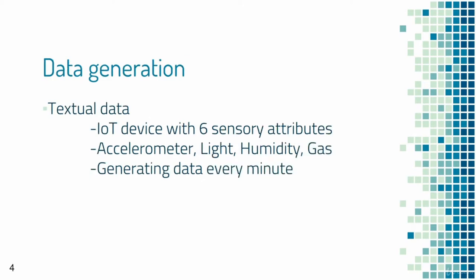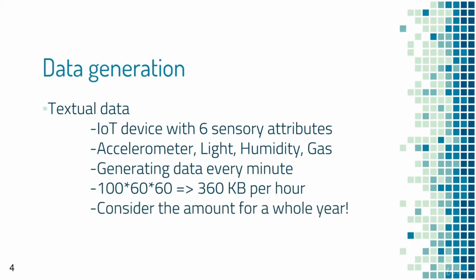The data generated from end devices can be categorized into two types: textual data and multimedia data in the form of images and videos. For example, an IoT device with an accelerometer with three axes and light, humidity, and gas sensors generating data every minute would produce 360 kilobytes per hour — and the amount of data generated in a year would be substantial.